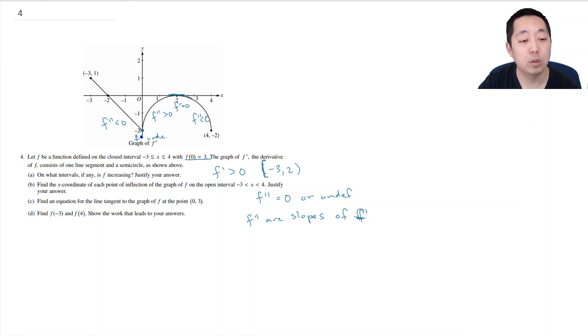Okay so where did it change signs? It changed signs at 0 and negative 2. So points of inflections are at x equals 0 and negative 2.